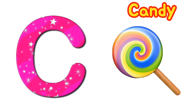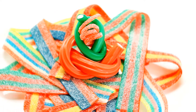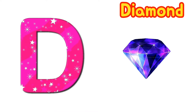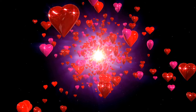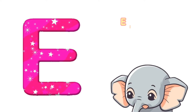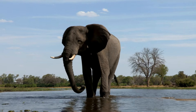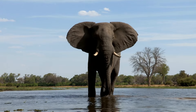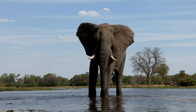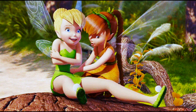C is for Candy. C-C-Candy. D is for Diamond. D-D-Diamond. E is for Elephant. E-E-Elephant. F is for Fairy. F-F-Fairy.